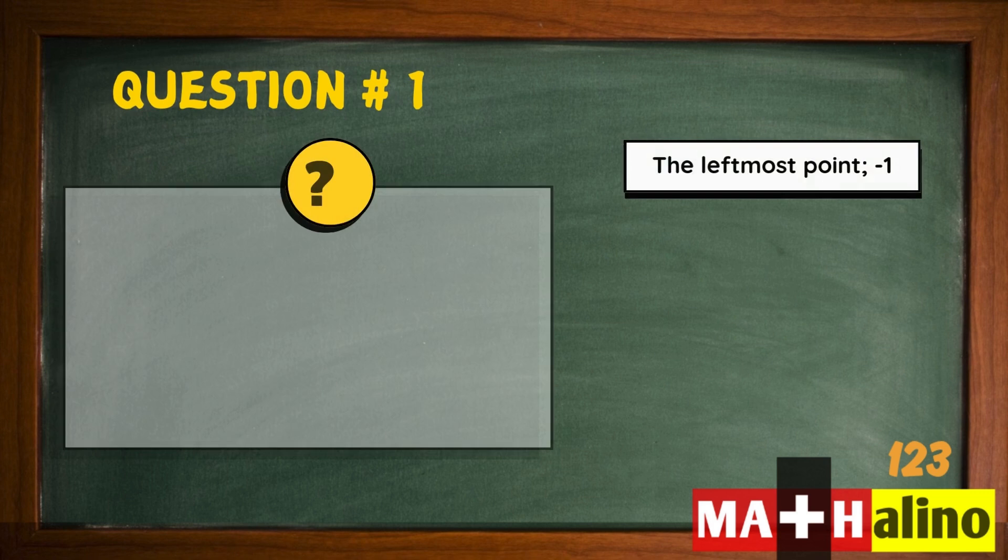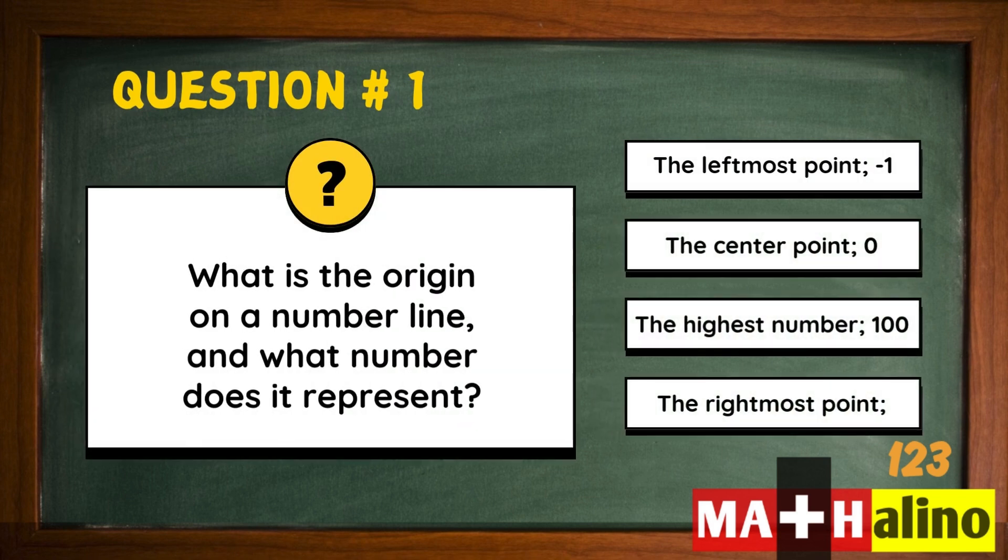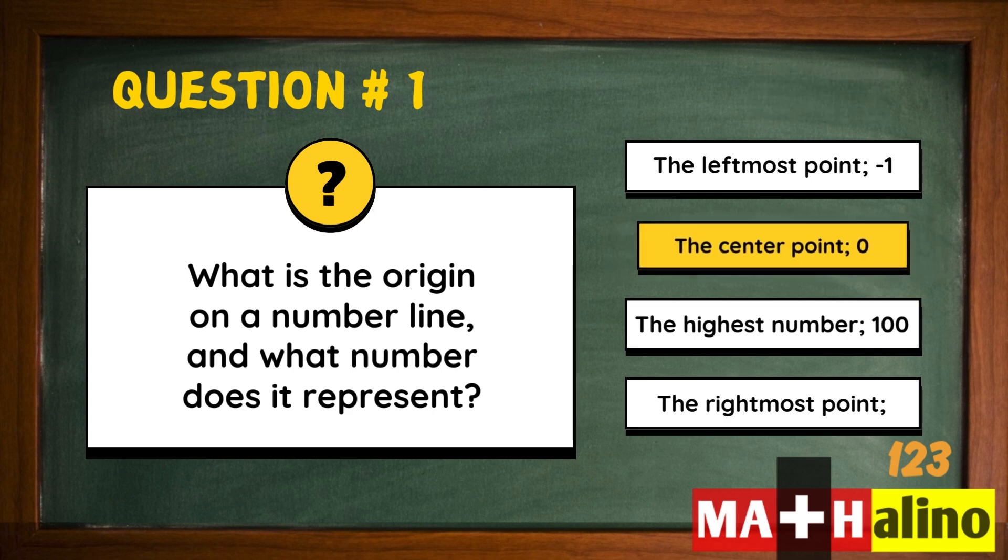Let's go. What is the origin on a number line and what number does it represent? The center point zero.